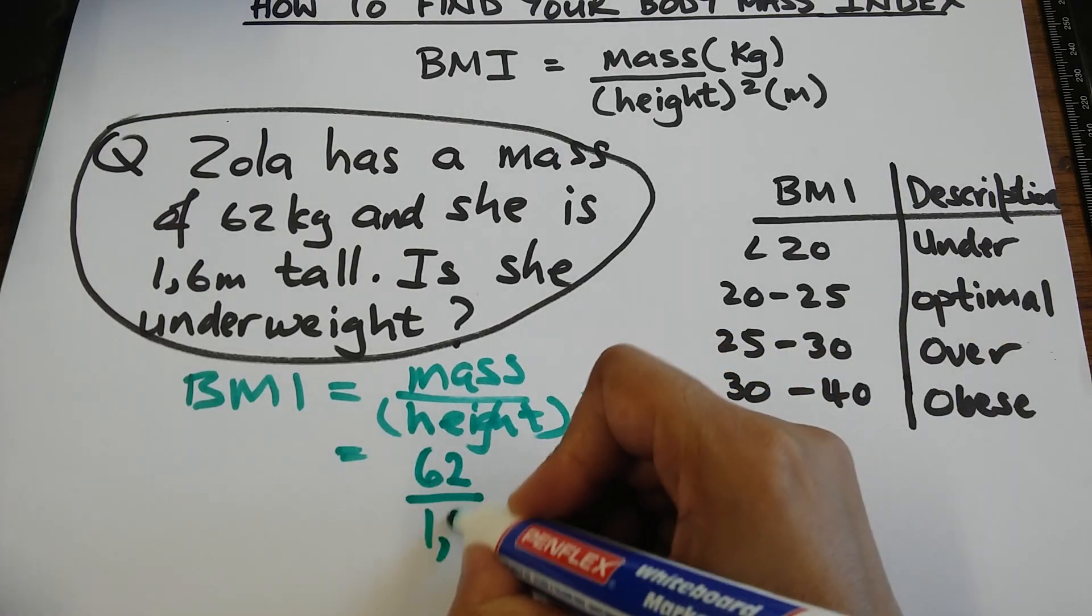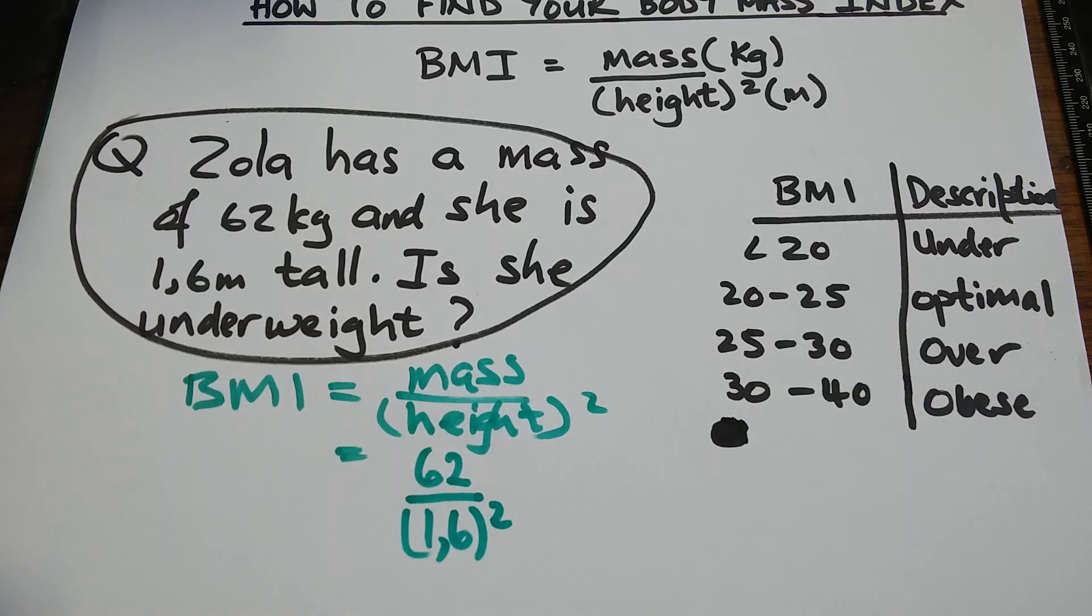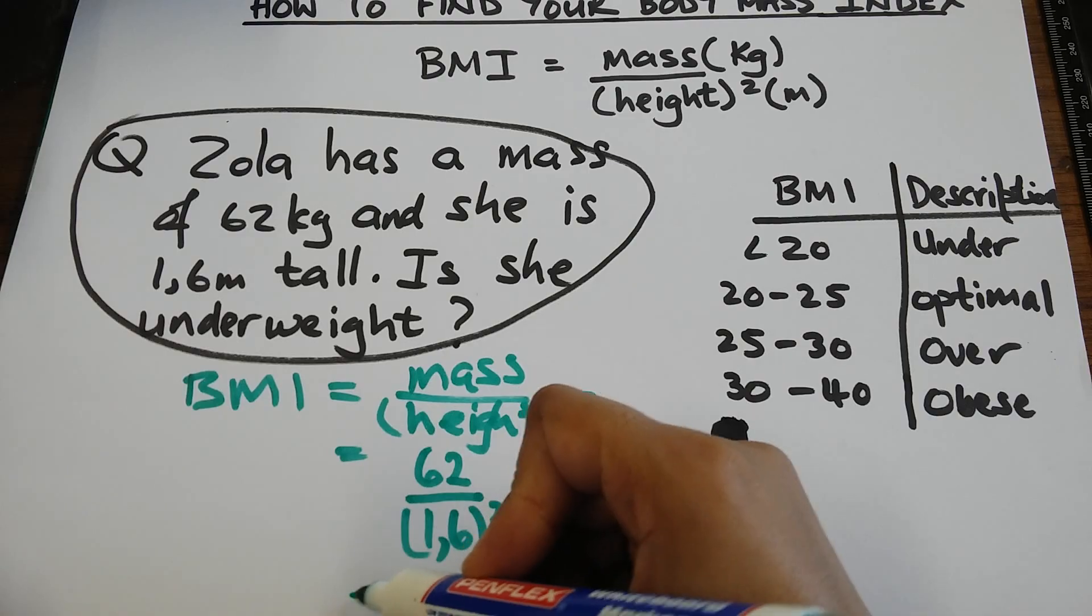Height, 1.6. Already in meters. I'm going to square the 1.6. So, I'm going to say 62 over 1.6 squared, which gives me 24,2.